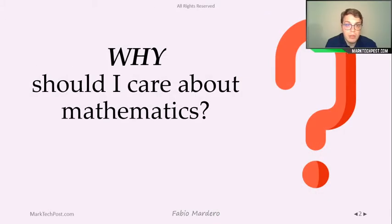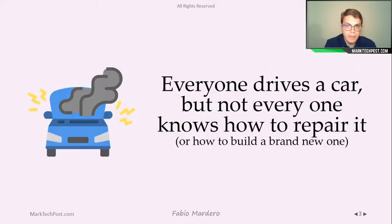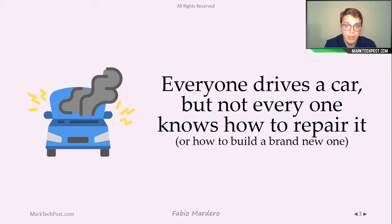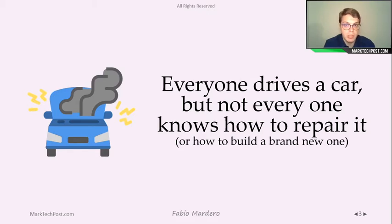For example, in the first part of the first course, we understood why we should care about mathematics when talking about machine learning. For example, when everyone drives a car but not everyone knows how to repair it — that's the same for machine learning. We can easily build a machine learning model and sometimes make it work, but it's not easy to debug it when the behavior is not what's expected. Or we are not able to build a brand new machine learning model, maybe for a specific project, if we do not know the math behind machine learning.